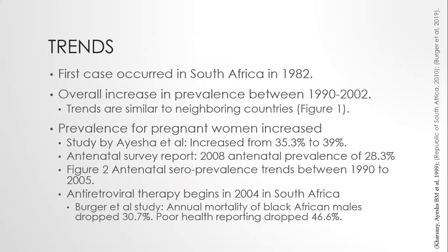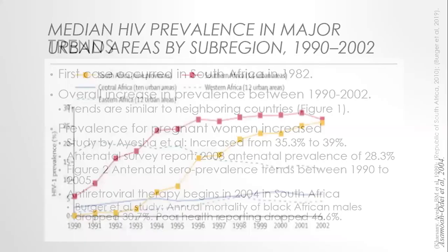Trends in HIV have also been documented in teenagers and women. In a study performed by Ayesha et al., a survey was conducted between 2001 to 2013 to estimate prevalence of HIV in pregnant women. This study showed that overall HIV prevalence increased from 35.3% to 39% in a span of about four years. An interesting observation is that HIV prevalence in teenage women declined from 22.5% to 17.2%. Also, in the 2018 antenatal survey, HIV incidence of 29.3% occurred in women between 15 to 49 years of age, which agrees with the range reported in the previous two years, 2017 and 2016.